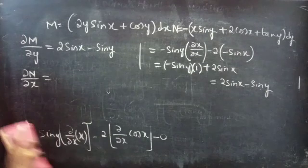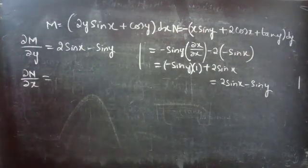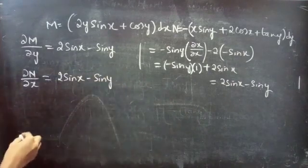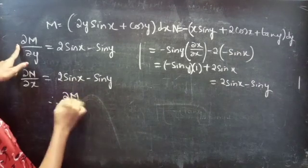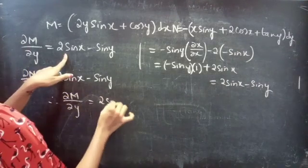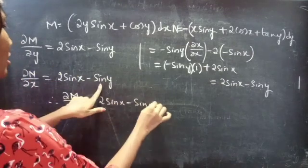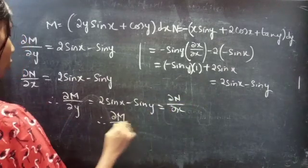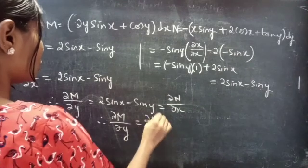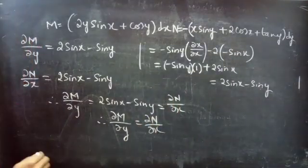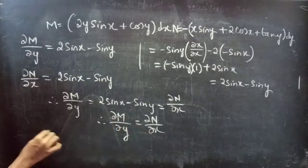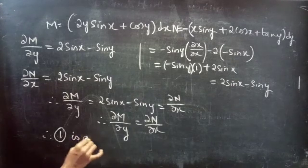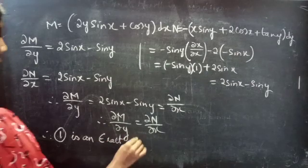Therefore ∂M/∂y = 2 sin x − sin y, which equals ∂N/∂x. Since ∂M/∂y = ∂N/∂x, we can see that the given differential equation is an exact equation.